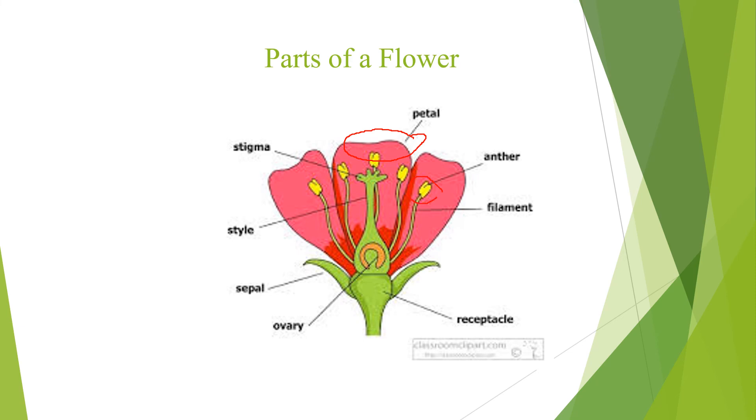This is called the anther. This is the filament. This part of a flower is called the receptacle. And the middle part is called the ovary. These are the sepals. This is the style. And this is the stigma.